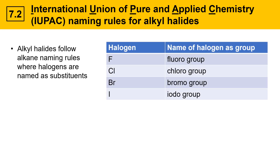The big addition here is that the halogens are named as groups. For example, if the molecule contains a fluorine atom, it's called a fluoro group. If it contains a chlorine atom, it's called a chloro group. Bromine atoms on a molecule are called bromo groups, and iodines on a molecule would be an iodo group.